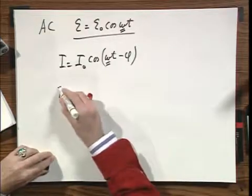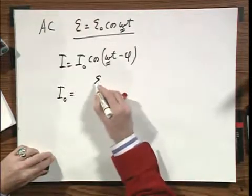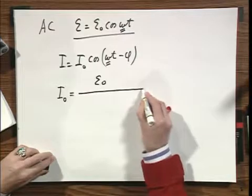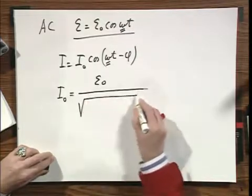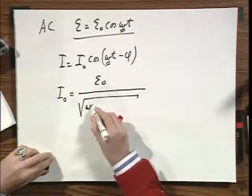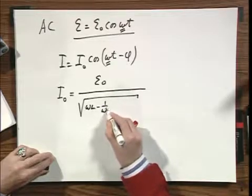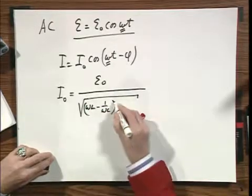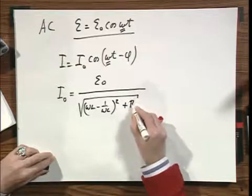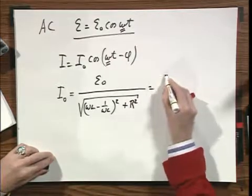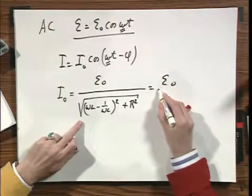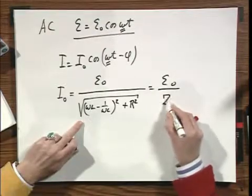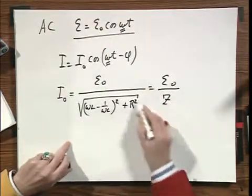I₀, which can be derived by solving the differential equation, is a little bit clumsy: E₀ divided by the square root of (ωL - 1/ωC)² plus R². We call this Z. This is also called Z.